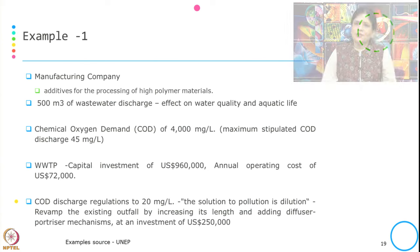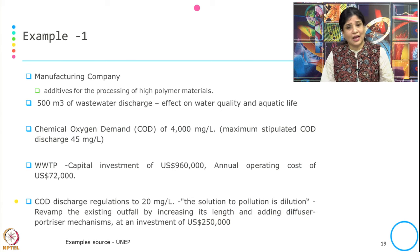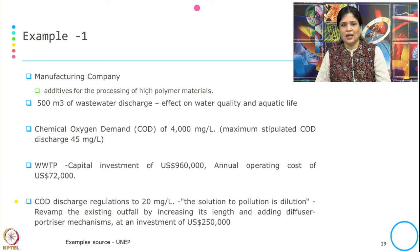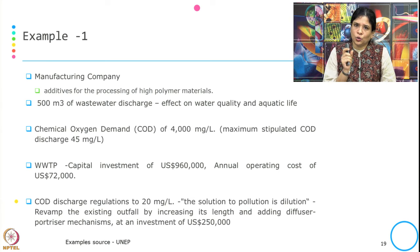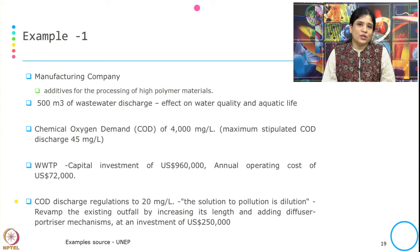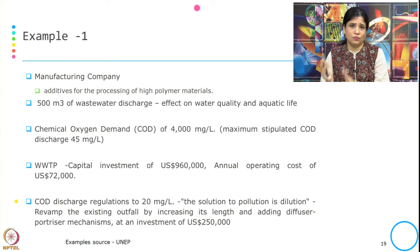Example one is from a manufacturing company in the business of producing additives for processing high polymer materials. Looking at the nature of business, the waste product for this business is wastewater discharge — this is the total amount of wastewater discharge they are discharging into the nearest local water bodies. The effect of this wastewater discharge was on water quality and also aquatic life, typically killing the fish in the water bodies because of chemicals associated with this wastewater.